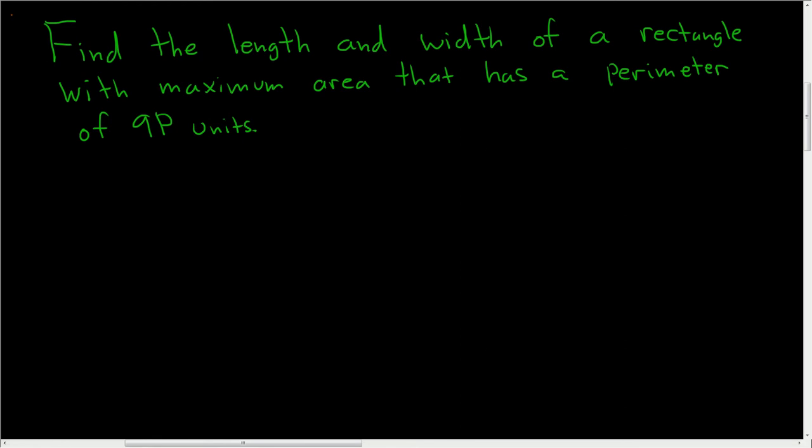We're asked to find the length and width of a rectangle with maximum area that has a perimeter of 9p units. Solution.